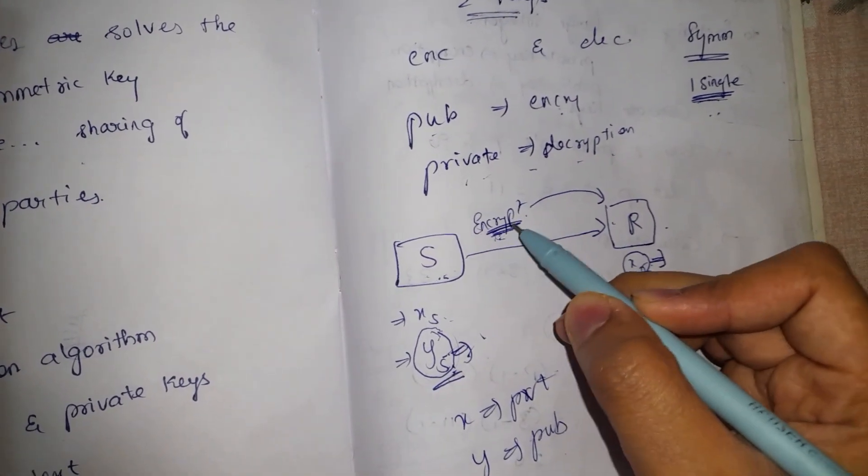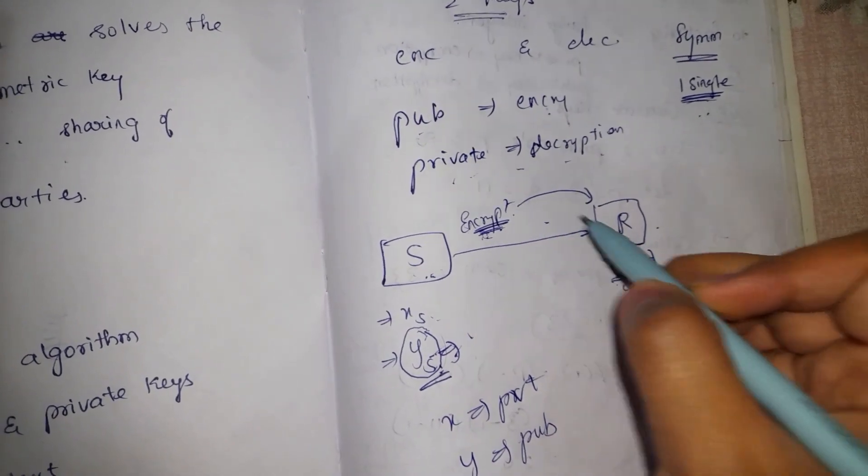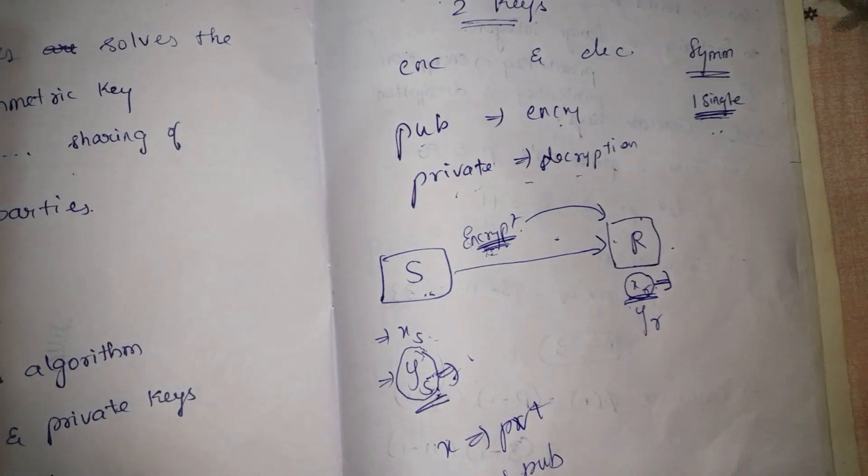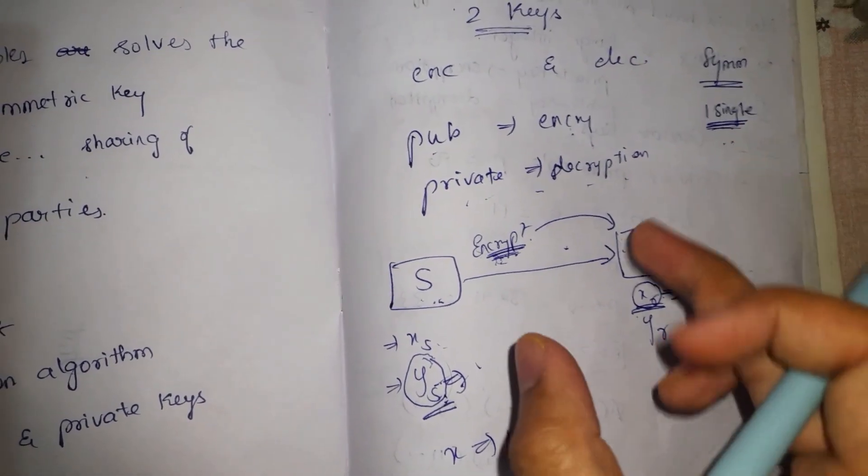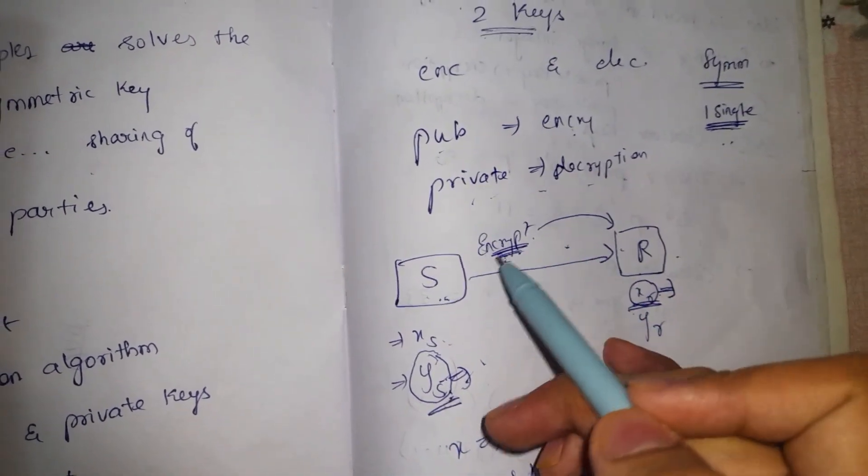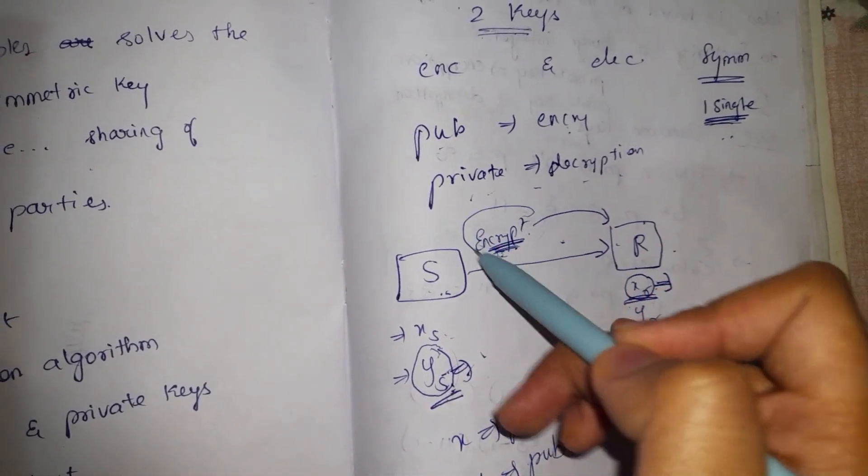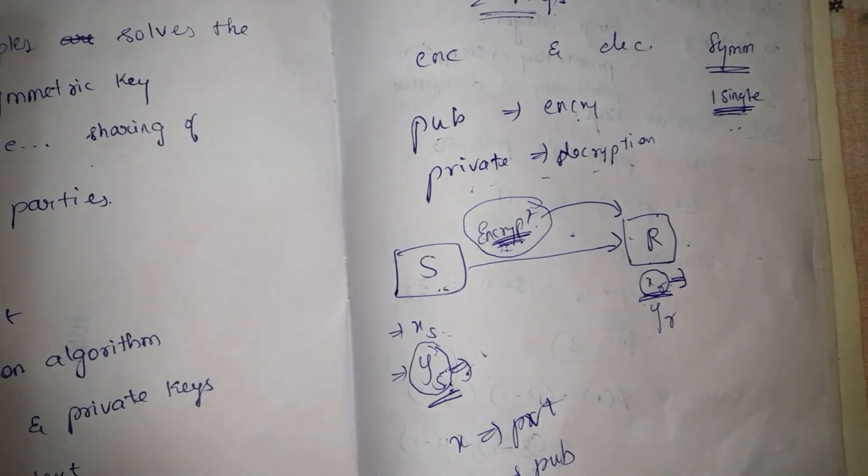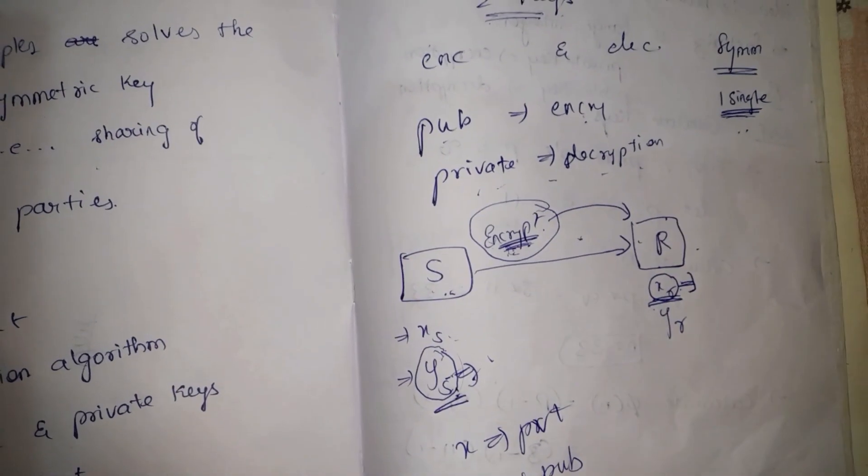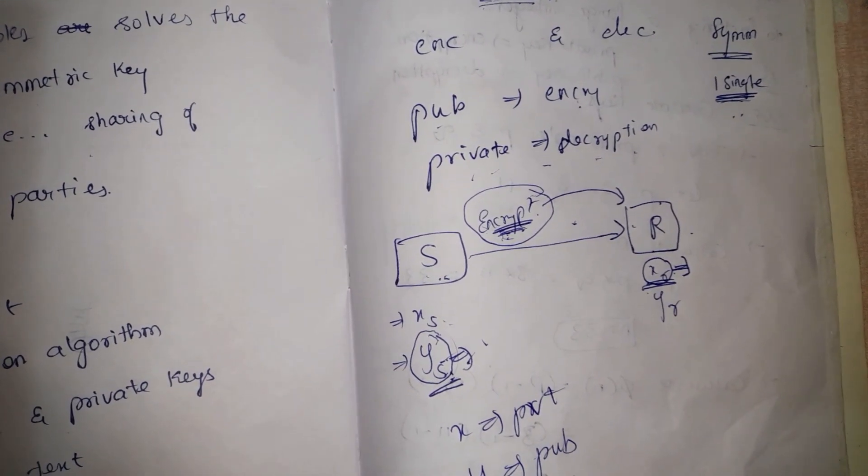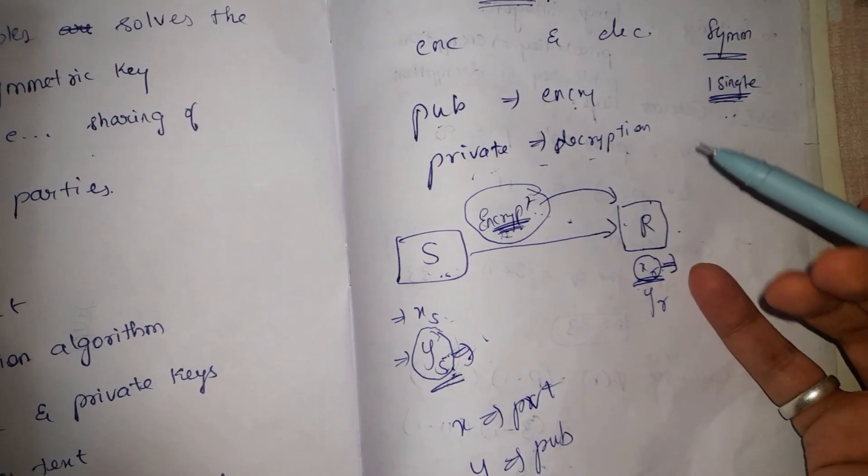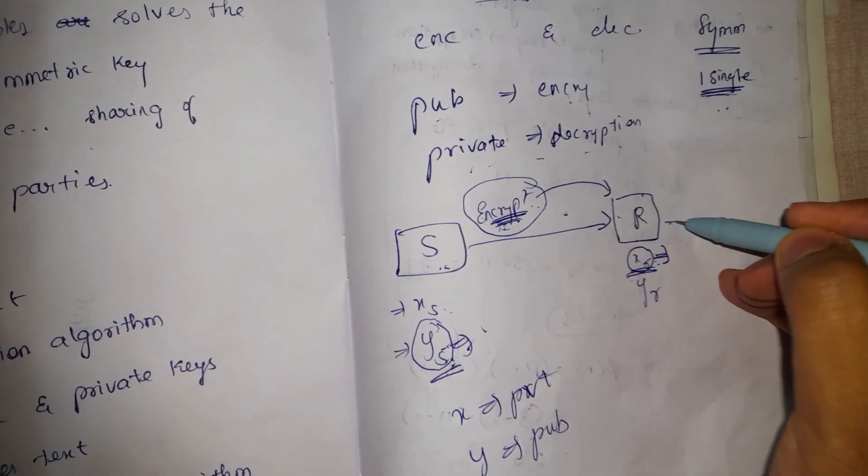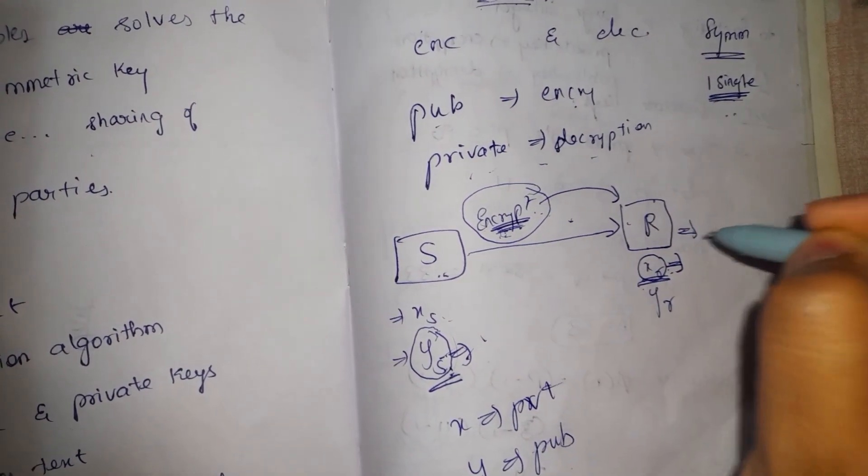Even if somebody manages to breach this conversation and access this encrypted message, they will not be able to read it because in order to decrypt this encrypted message, they will need the private key of the receiver, which only the receiver has.